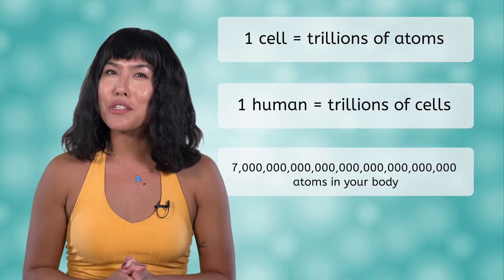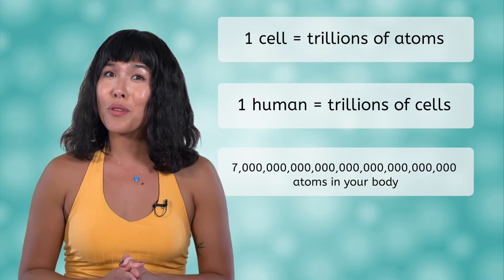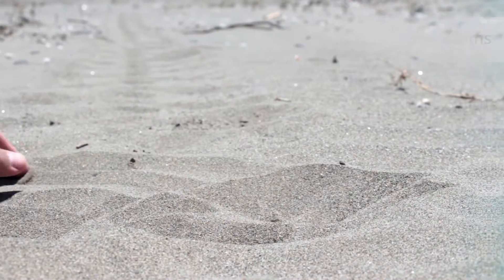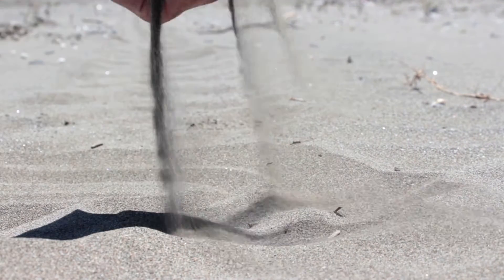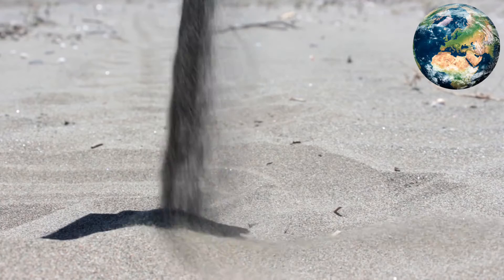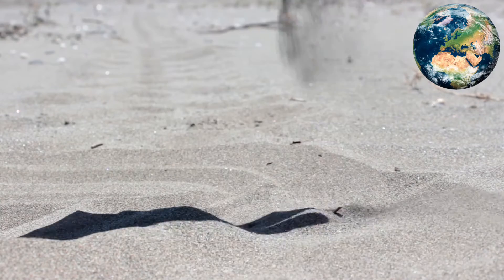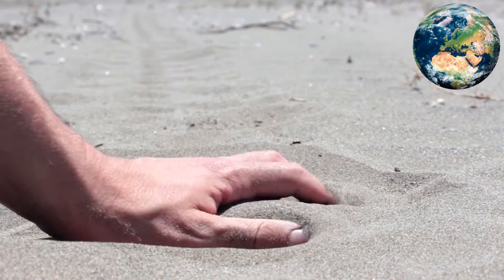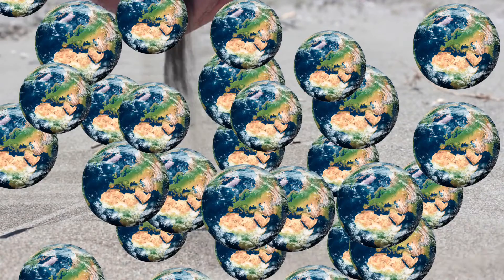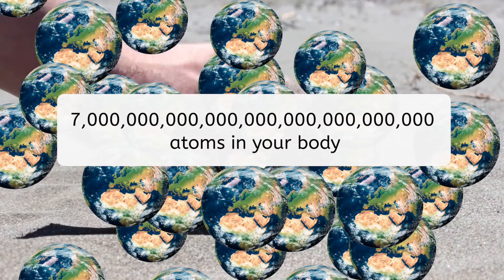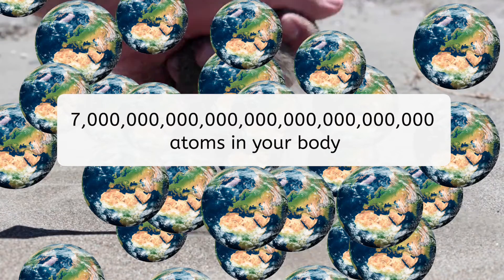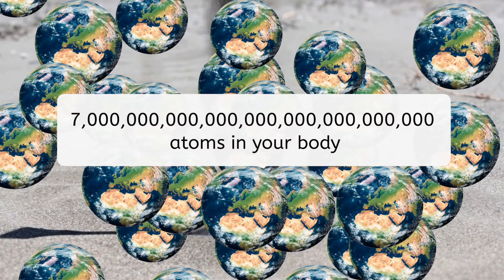Want to understand just how big that number is? Imagine all the grains of sand on Earth. Now imagine all the grains of sand on a million Earths. That's seven octillion grains of sand — that's how many atoms you have in your body.